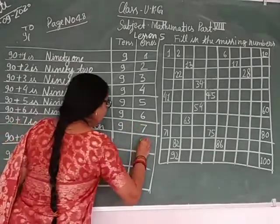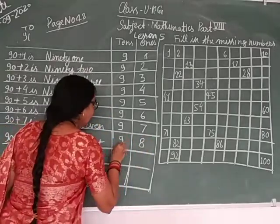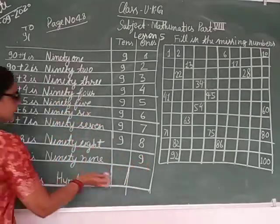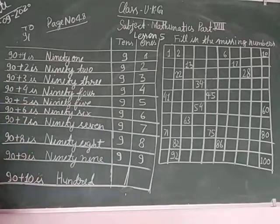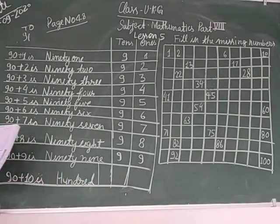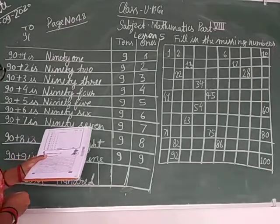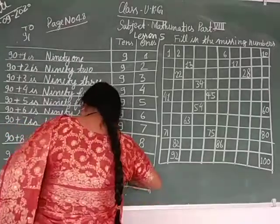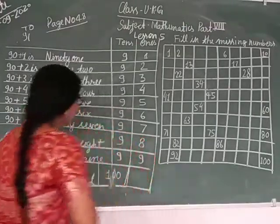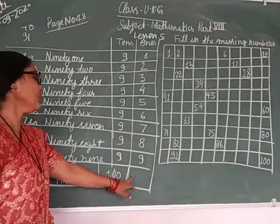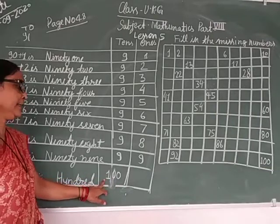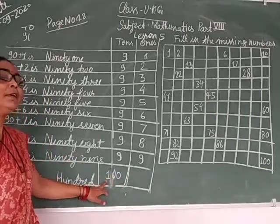98. 8 is the ones and 9 is the tens. 99. 9 is the ones and 9 is the tens. Now then, 100. 00 is the ones, 0 is the tens, and 1 is the hundreds. Zero is ones, zero is tens, and one is hundreds.